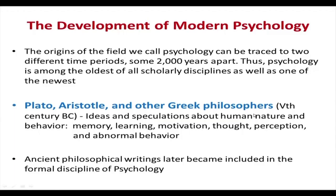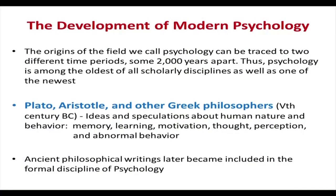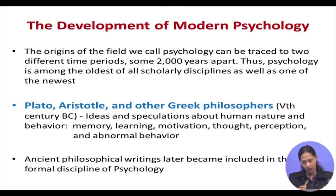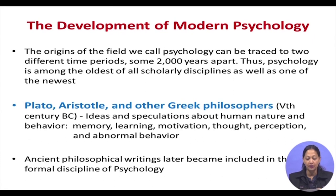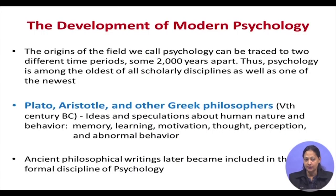To consider the development of modern psychology, if we go back to its roots, we see that psychology is covered within a span of more than two thousand years. The origin of the field can be traced to two different periods: around the time of Plato, Aristotle, and other Greek philosophers, and then the modern philosophers of the eighteenth and nineteenth centuries. During the fifth century BC, these Greek philosophers had ideas and speculations about human nature and behavior, covering memory, learning, motivation, thoughts, perception, and even abnormal behavior. All these philosophical writings have become the roots of the formal discipline of psychology.